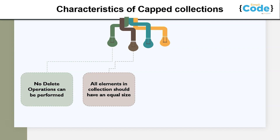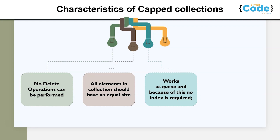Next, all elements in a collection should have an equal size. When creating a capped collection you have to mention its size, and each element will take an equal share of it. For example, if you allocate 100 bytes and insert four records, each document will take 25 bytes. Next, it works as a queue and because of this no indexing is required. A capped collection does not contain any default indexes unlike a normal collection. Even the ID field lacks an index. MongoDB doesn't waste time searching for a location to store a new document on disk, so insert operations run very quickly because there is no wastage in disk space organization.